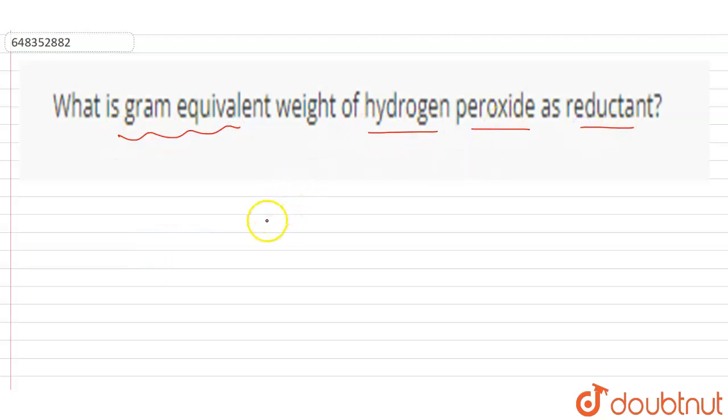As a reductant, hydrogen peroxide decomposes into O2 and H2. So we can see that...